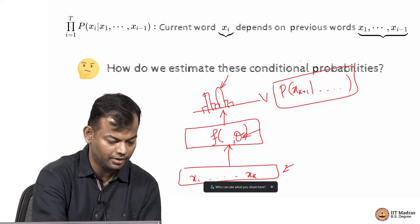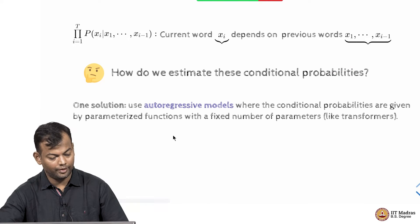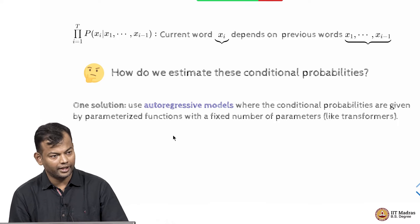We will talk of course, talk more about this, but I want to make sure that the intuition is clear. So, how do we estimate these conditional probabilities? One solution among many solutions is to use what are known as autoregressive models.